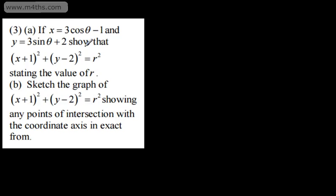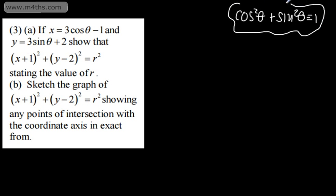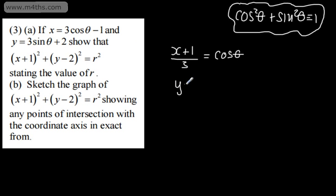Question 3, part A: if x = 3cosθ - 1 and y = 3sinθ + 2, show that (x+1)² + (y-2)² = R². I'll write the identity cos²θ + sin²θ = 1. I'll get cosθ in terms of x: (x+1)/3 = cosθ. And sinθ in terms of y: (y-2)/3 = sinθ. Squaring both and adding gives 1.